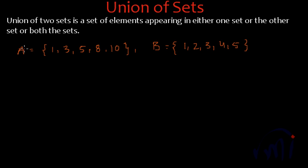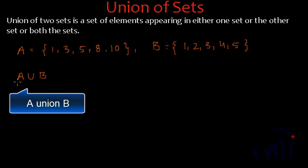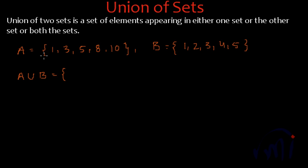Then how to find the union? The union of these two sets will be written as A, this is the sign of union, B, and it is read as A union B. This will be a set of all these elements. So here if we see properly this 1 is getting repeated. At the same time 3 and 5 they are also getting repeated.